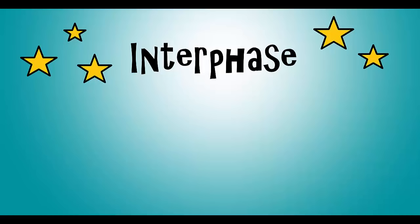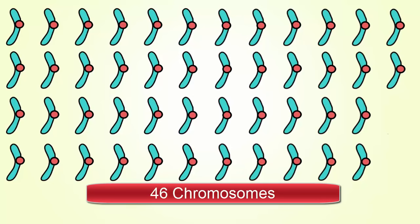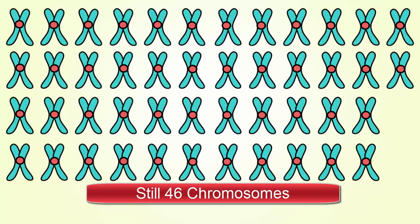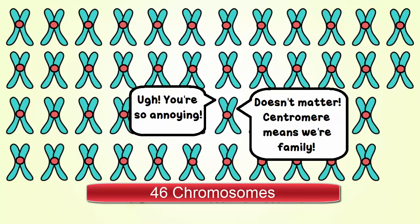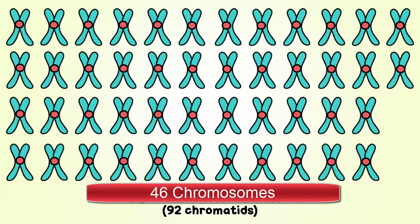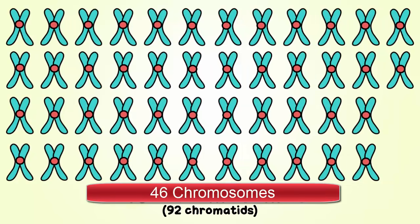Interphase is a step that happens one time before mitosis and meiosis can start. In interphase, this is where we duplicate the chromosomes. So first we start with 46 of these chromosomes, which is how many chromosomes are found in human body cells. They kind of look like little sticks. But after duplicating in interphase, we still have 46 chromosomes technically, but they have two chromatids — we call them sister chromatids — and they're held together at one centromere. As long as those chromatids are still attached at the centromere, we still count 46 chromosomes. But if they weren't attached, technically you could say there were 92 chromosomes. Right now, there are 46 chromosomes and 92 chromatids.